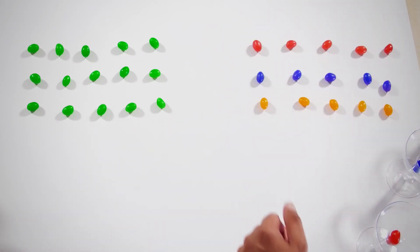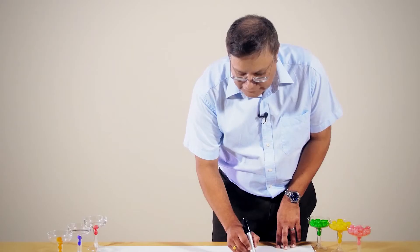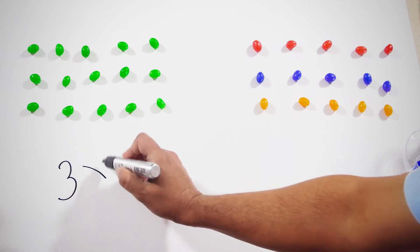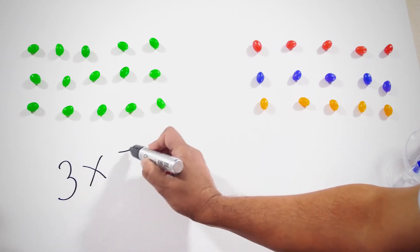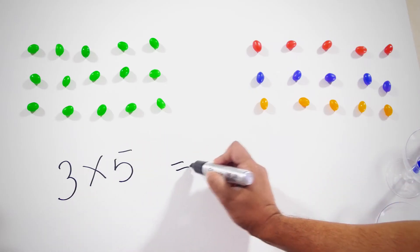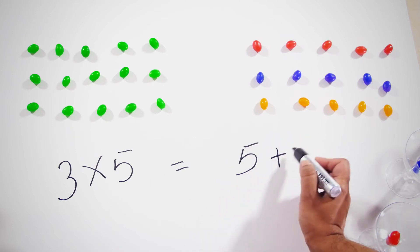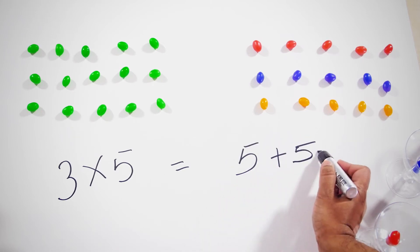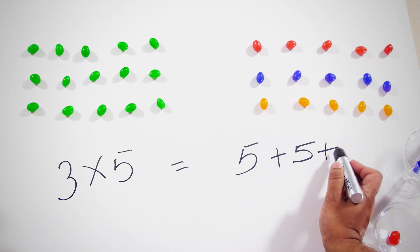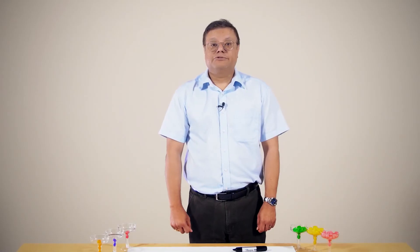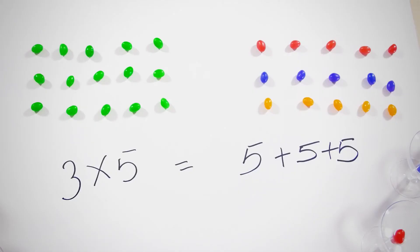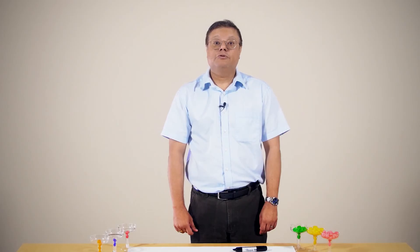The number of 5 is 15. 3 times 5 equals 5 plus 5 plus 5, which equals 15.